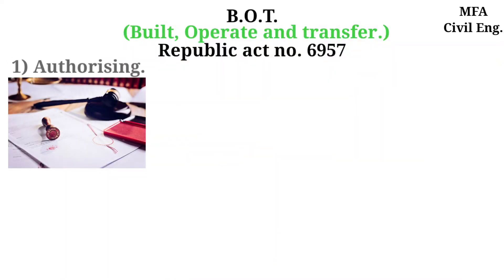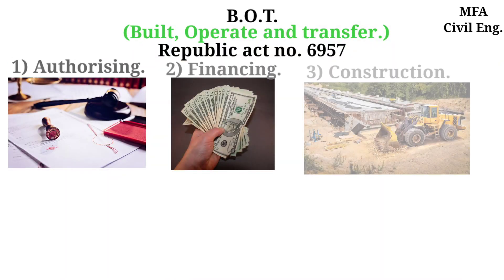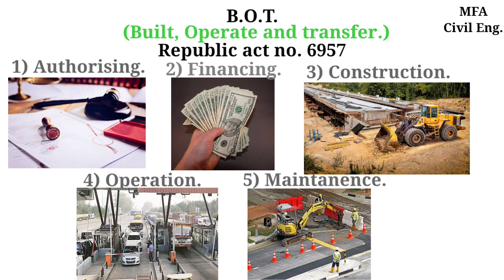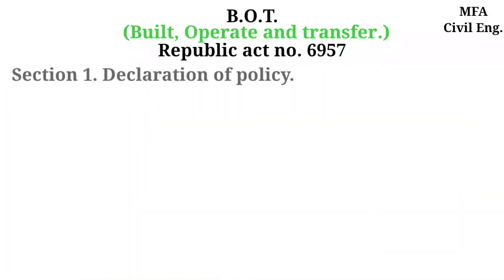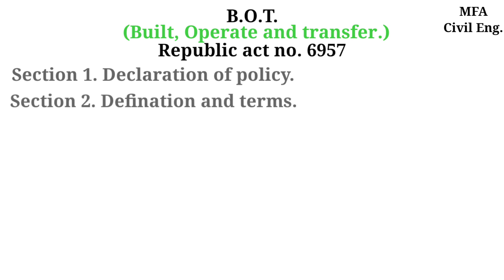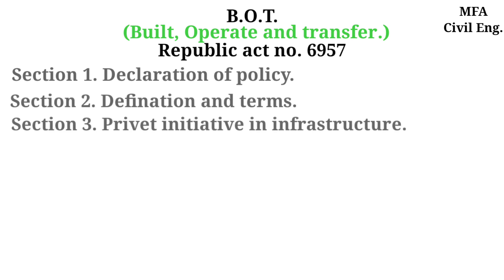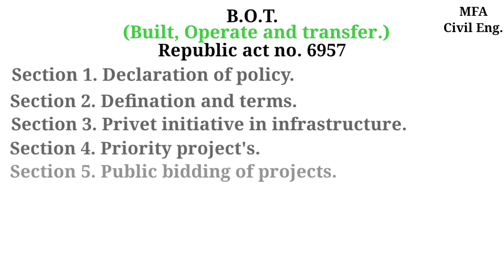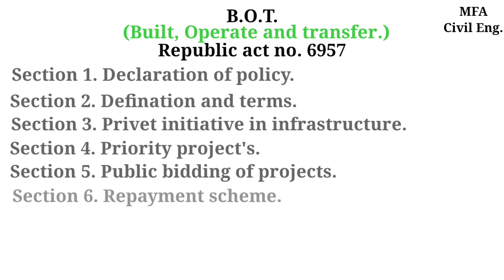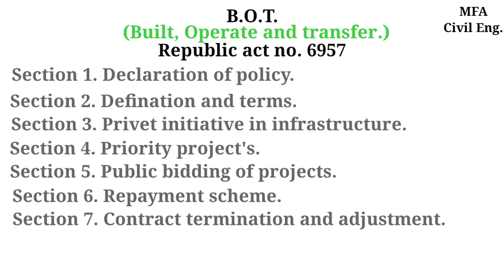For maintaining discipline in nation growth, the government has introduced an act named Republic Act Number 6957, authorizing the financing, construction, operation, and maintenance of infrastructure projects by the private sector and for other purposes of nation growth. Under this act, there are seven sections: declaration of policies, definitions and terms, private initiative in infrastructure, priority projects, public bidding of projects, repayment schemes, and contract termination and adjustment.